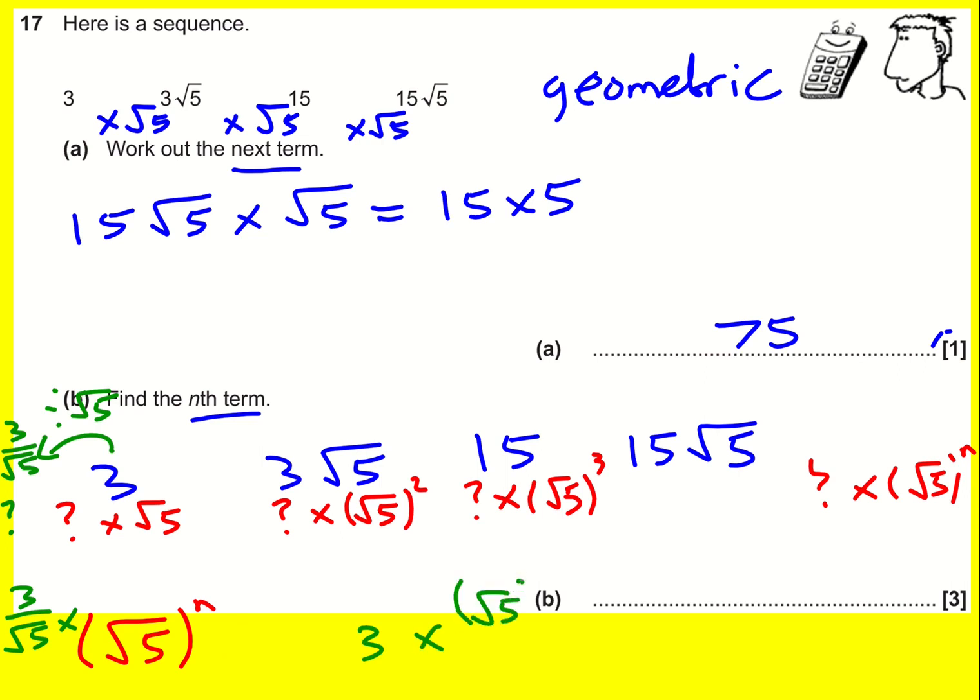I can use my rules of powers, like x to the n divided by x is x to the one here, so that becomes x to the n minus 1. It's the same here - it's going to be 3 times root 5 to the n minus 1. That's the most simple answer you can write.